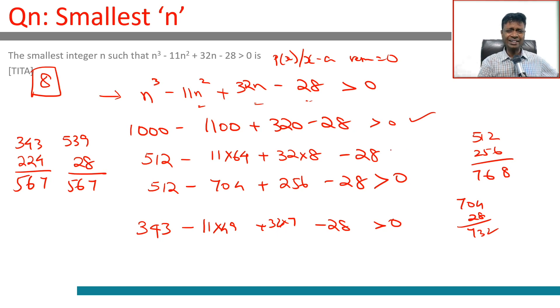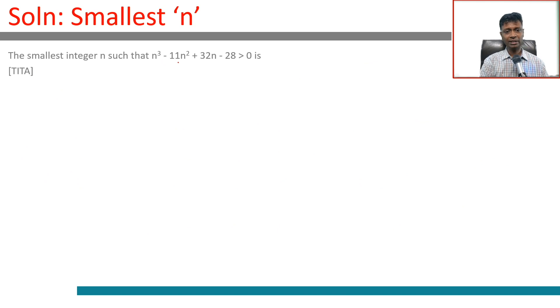So we can look to factorize this. We have n³ - 11n² + 32n - 28. If you put n = 1: 1 - 11 + 32 - 28, it adds up to 33 minus 39, doesn't work. n = 2: 8 - 44 + 64 - 28 is 72 - 72. This works!